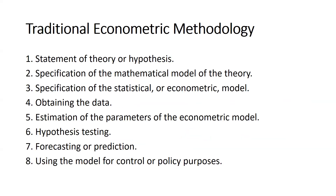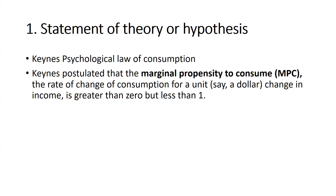Traditional econometric methodology involves several steps. First is the statement of theory or hypothesis. Second is specification of the mathematical model of the theory. Third is specification of the statistical or econometric model. Fourth is obtaining the data. Fifth is estimation of the parameters of the econometric model. Sixth is hypothesis testing. Finally, forecasting or predictions, and using the model for control or policy purposes.